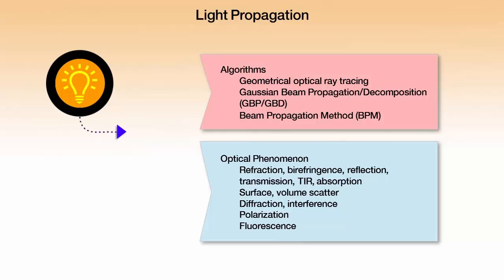And finally, beam propagation method — it's actually a finite difference beam propagation method that is used for things like waveguides. We don't do a lot of that work; it's not a specialty. But it's useful if you have a waveguide, for instance an optical fiber coupled laser source, that you want to use as a source in a macroscopic optical system. We could feed by beam propagation method the laser source out of the fiber end and then change to propagating it by one of the other methods to do the macroscopic part.